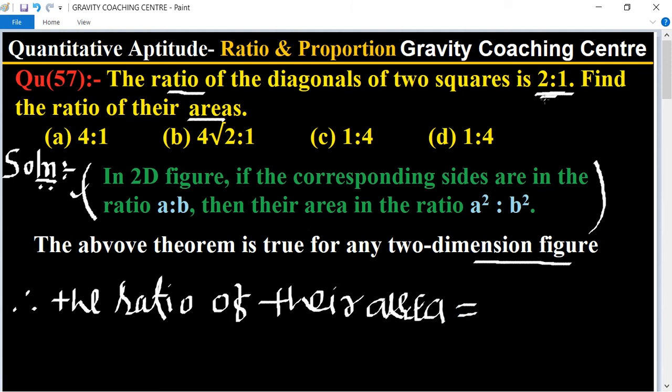The ratio of the diagonal is given instead of the ratio of sides. So 2 squared ratio 1 squared.